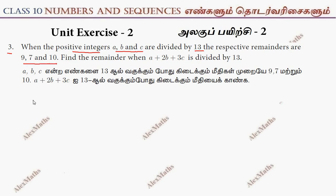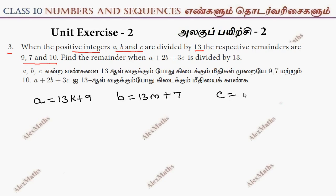A is equal to 13k plus the remainder 9. B is equal to 13m plus the remainder 7. C is equal to 13n plus remainder 10.